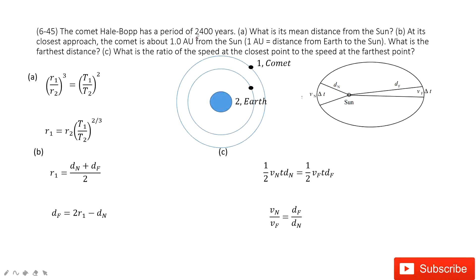Until you the period from the comet, so T1 is given, 2400 years. And also, we know from common knowledge that the period for Earth rotating around the Sun is just one year.